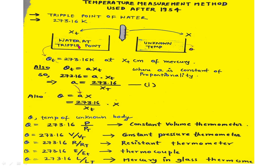As the thermometer makes contact with water at the triple point, the level of mercury inside the thermometer may rise or fall depending on the initial temperature of the thermometer. Let the length of the mercury recorded by the thermometer when placed in contact with the system at triple point be x_t centimeters. The mercury thermometer reading shows x_t centimeters, and the temperature of water at triple point is 273.16 Kelvin.